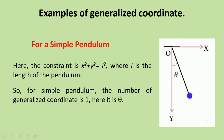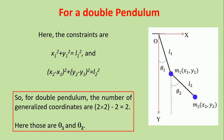Now let's look at an example: a simple pendulum. In the diagram, theta is the angle, the bob's mass is m, and the length of the pendulum is L. There is only one constraint: x² + y² = L², where L is the length. The bob moves in two dimensions, so the number of generalized coordinates is 2 − 1 = 1. That one generalized coordinate is theta.